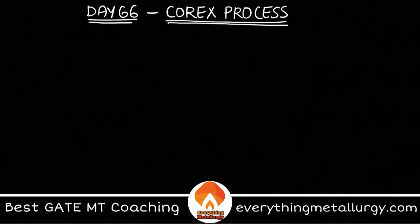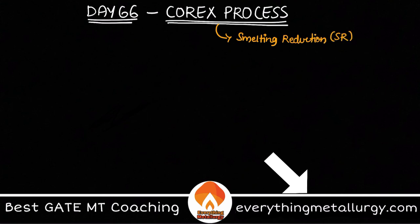So what is the COREX process? This is one kind of a smelting reduction process, usually called an SR process — an alternative route. It is basically different from the traditional blast furnace iron making. Here, smelting means melting plus reduction.